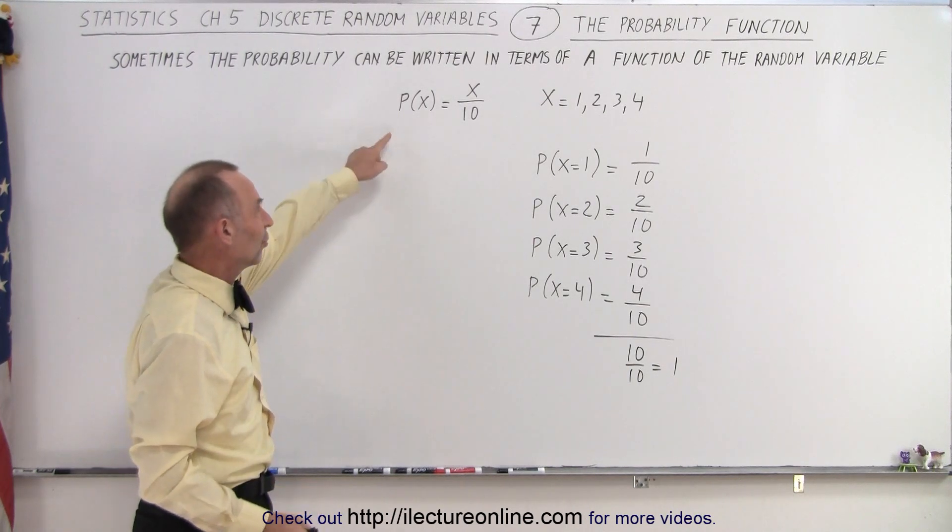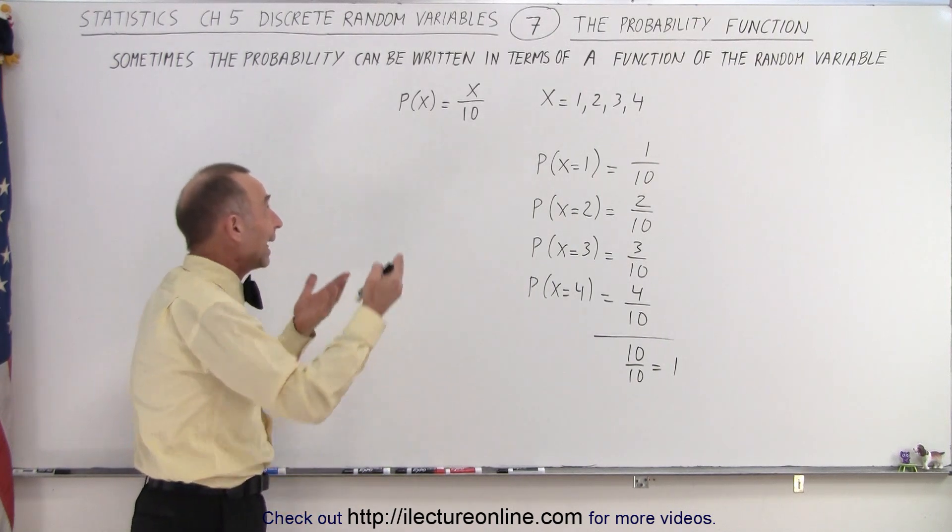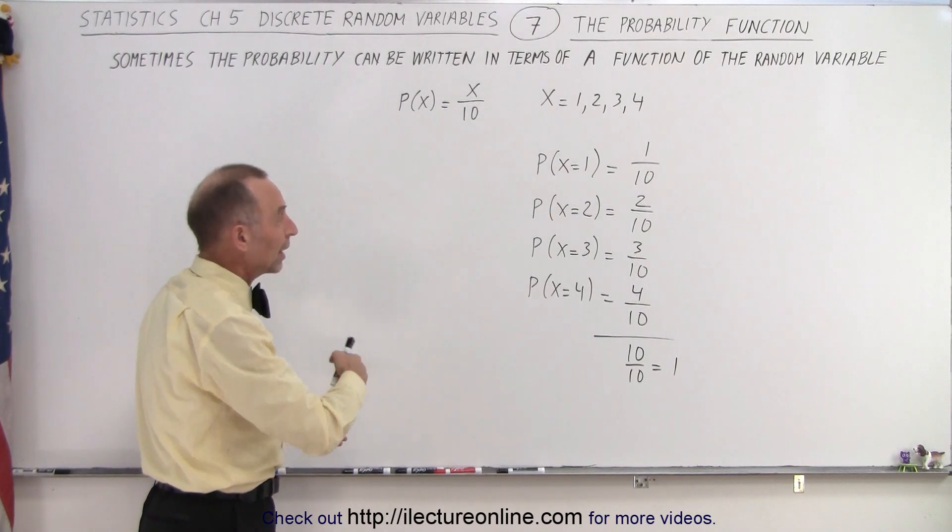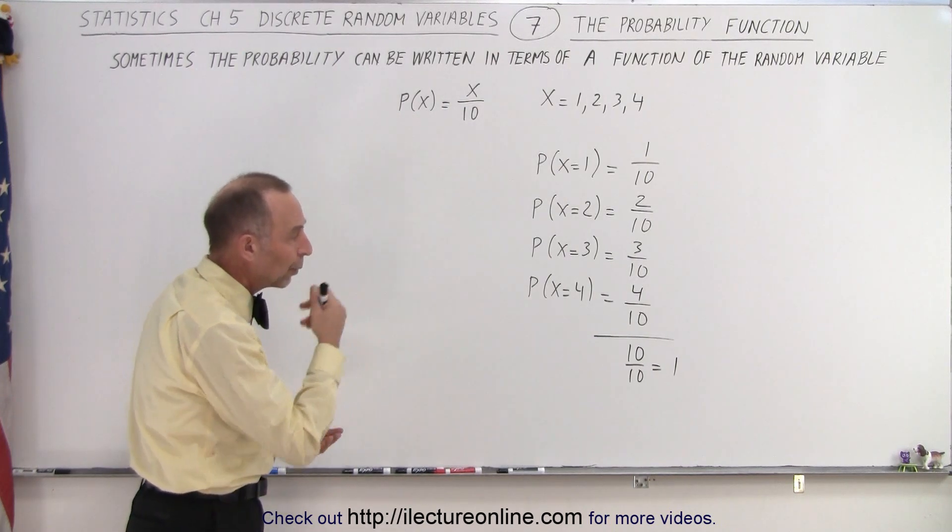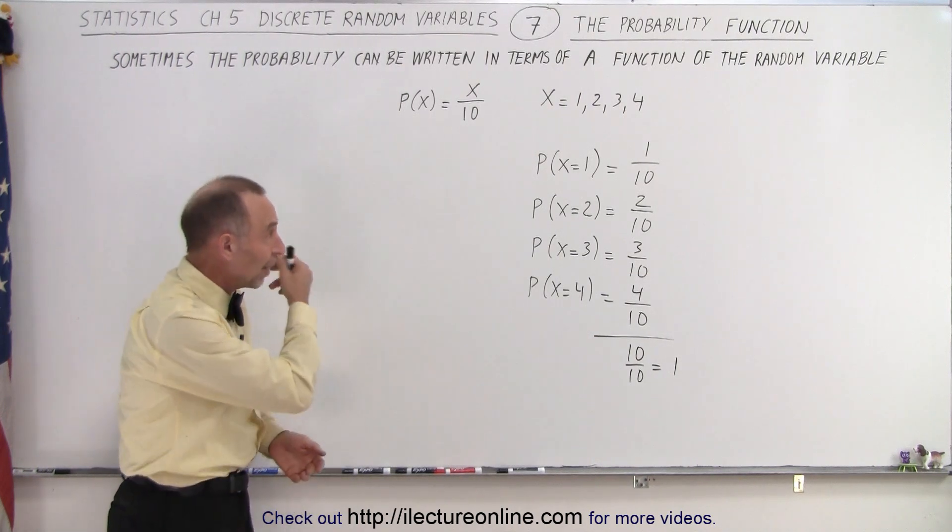But in essence, this is more like what we would expect to see, a real function for which we can plug in every possible value for x that is allowed. And then we see that when we then add up all the probabilities, we end up with a 1. And that is then the definition of a probability function.